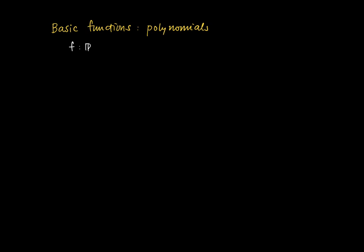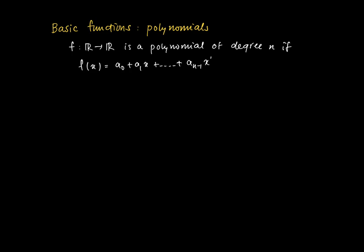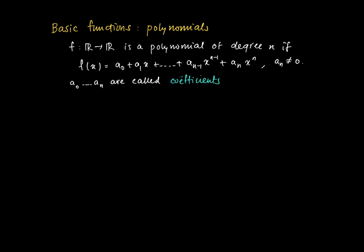A function with domain ℝ mapped into ℝ is called a polynomial of degree n if it can be written as a sum of power functions: f(x) = a₀ + a₁x + ... + aₙ₋₁xⁿ⁻¹ + aₙxⁿ, where the highest power equals n. We call this a polynomial of degree n, and aₙ is not equal to zero. The values a₀ through aₙ are called the coefficients of this polynomial.